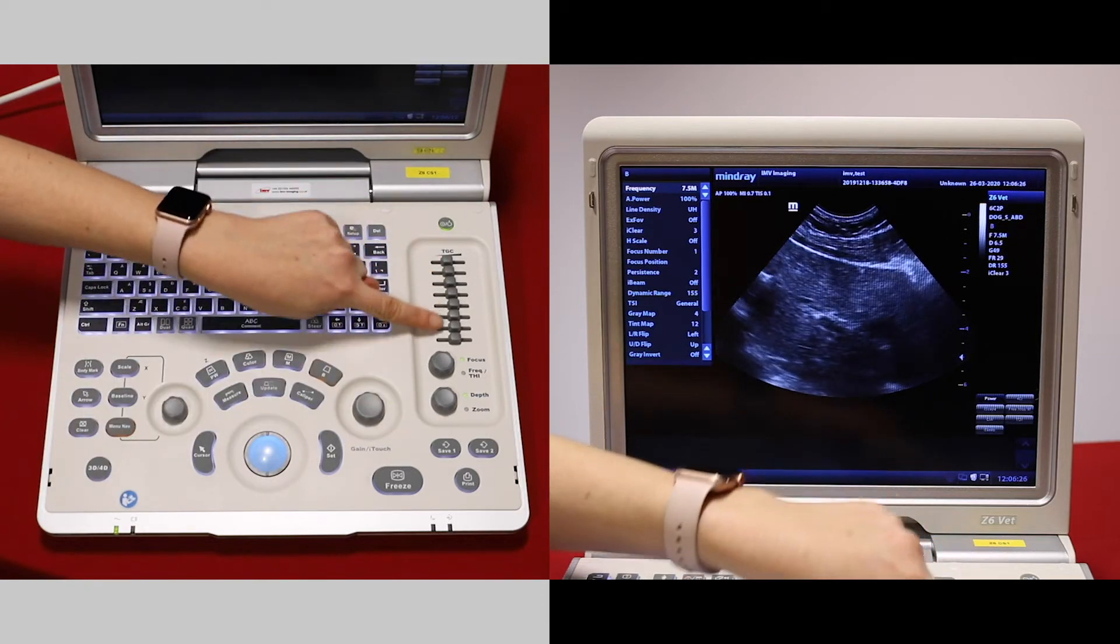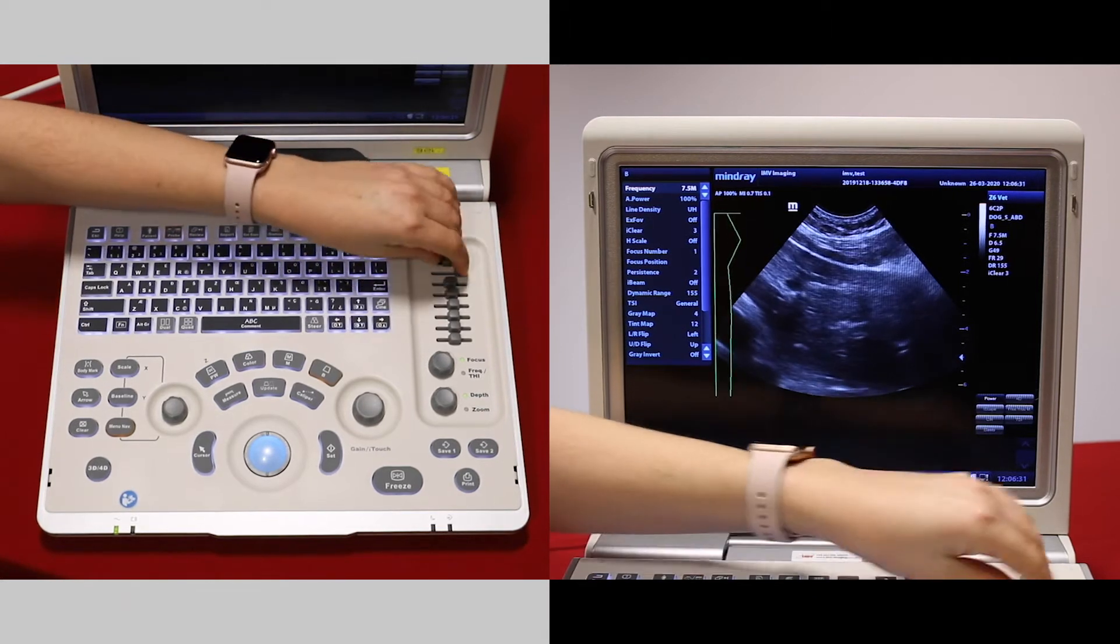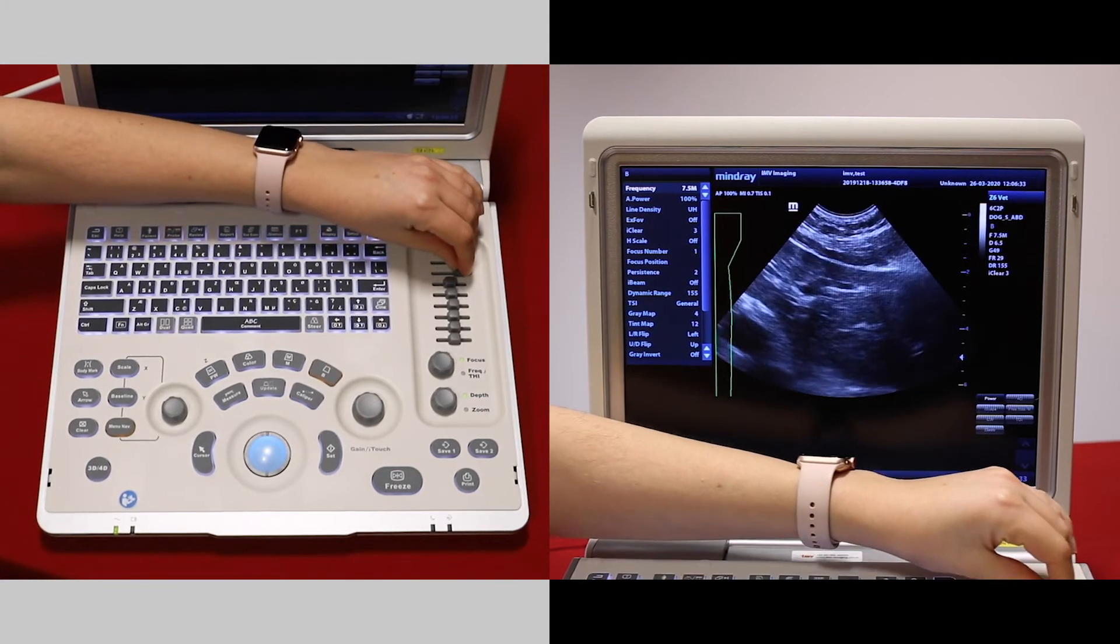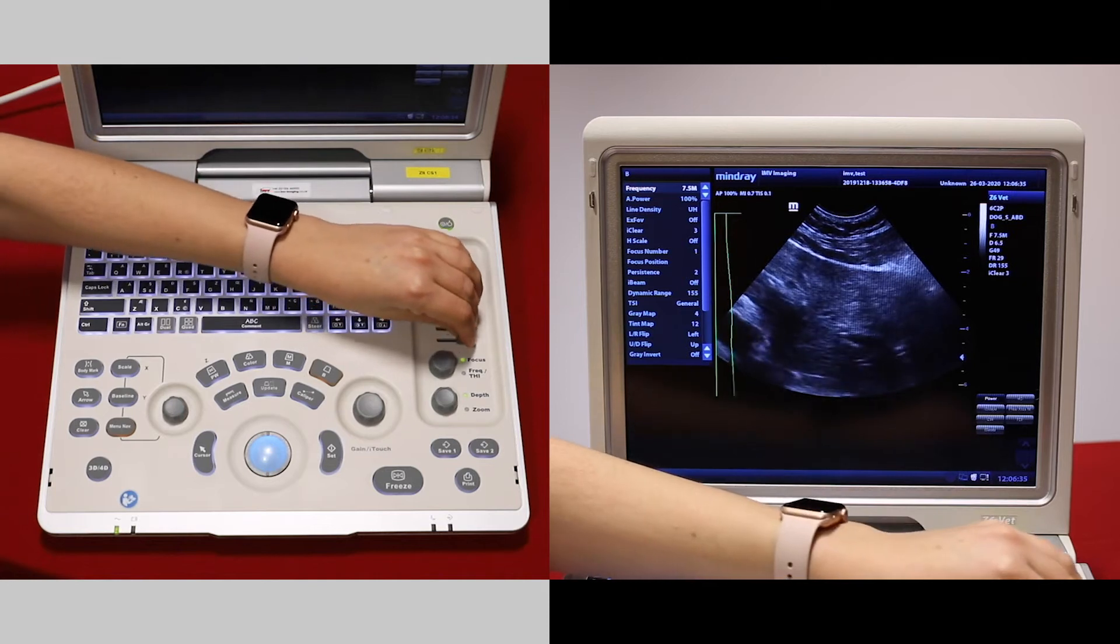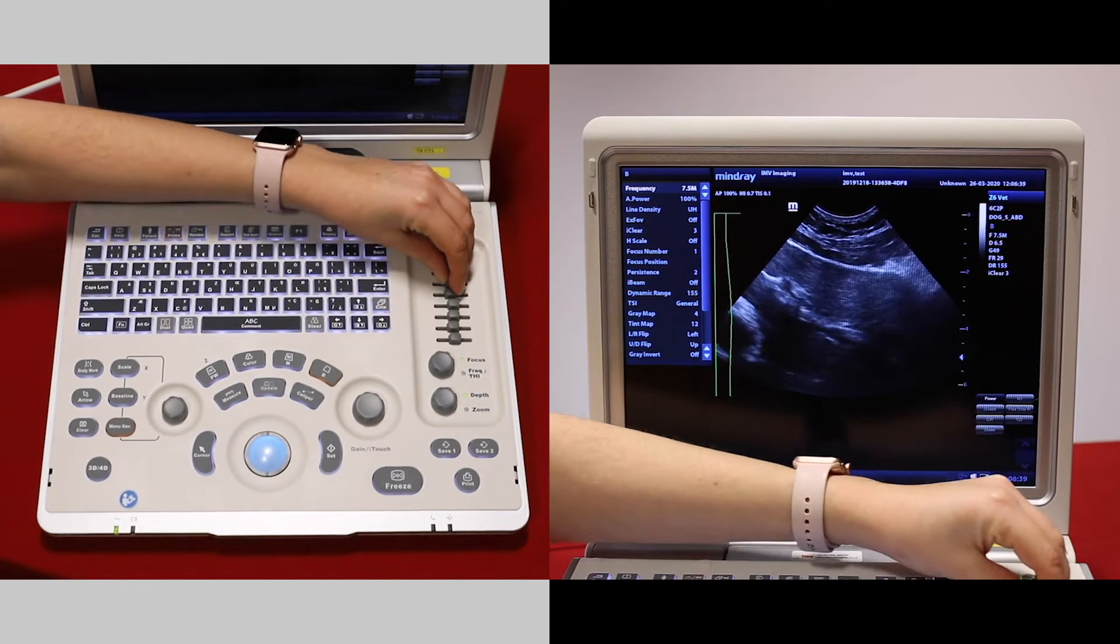The time gain compensation sliders change the gain per line of the image. At the top here we can increase or reduce our gain, and the bottom ones change the gain at the bottom of the screen. Make sure you've got an evenly gained image.